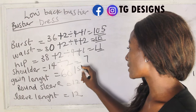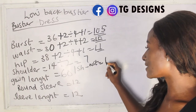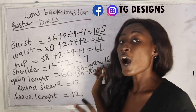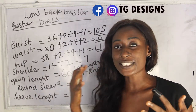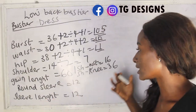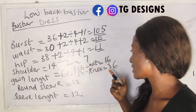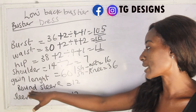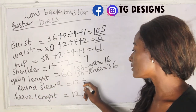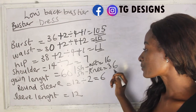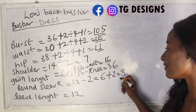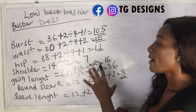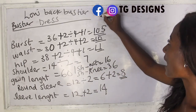Shoulder to waist is 16 inches; shoulder to knee length is 36 inches. These measurements are what you'll find in the size chart. Our round sleeve is 12 inches: 12 divided by 2 = 6 inches, plus 2 inches sewing allowance = 8 inches. Our sleeve length is 12 inches: 12 plus 2 inches sewing allowance = 14 inches.